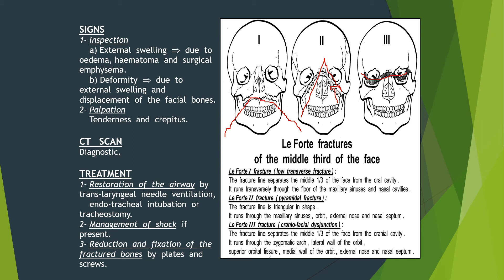By inspection, you will see external swelling due to edema, hematoma, and surgical emphysema, and deformity due to displacement of facial bones. By palpation, there will be tenderness and crepitus. CT scan is diagnostic. Treatment: first restore the airway by translaryngeal needle injection, endotracheal intubation, or tracheostomy; manage shock if present; then perform reduction and fixation of the fractured bones by plates and screws.